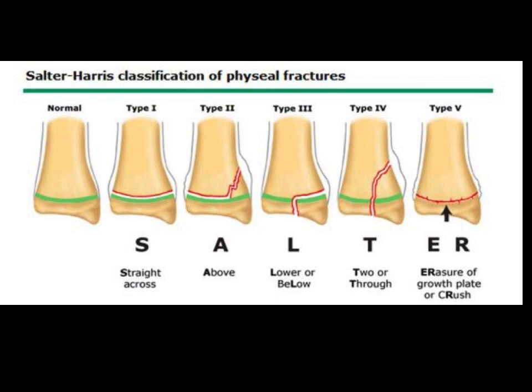To review our Salter-Harris classification in pediatric fractures involving the growth plate: type 1 is just a fracture of the physis; type 2 extends from the physis into the metaphysis; type 3 goes from the growth plate down into the epiphysis; type 4 involves both the metaphysis going through the growth plate into the epiphysis; and type 5 is a rarer crush injury with loss of the growth plate altogether.